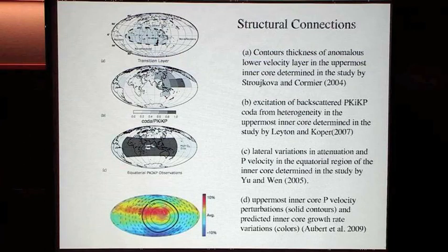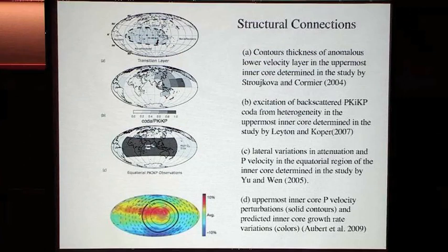The correlation of attenuation and velocity — eastern hemisphere having higher attenuation, low Q, and being fast, while the western hemisphere has lower attenuation and is slow — is opposite to what we're used to in the mantle. There's a real need to understand why we see this opposite correlation. It might simply be due to the fact that as seismologists, we're not used to interrogating the properties of metals versus silicates.